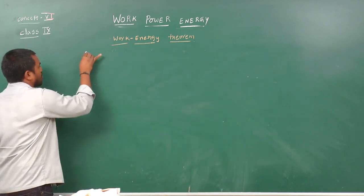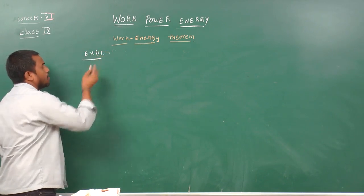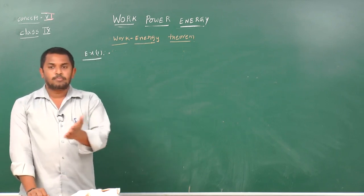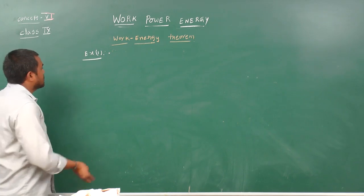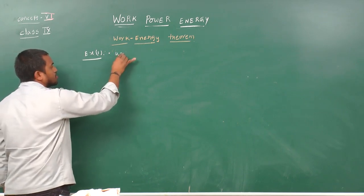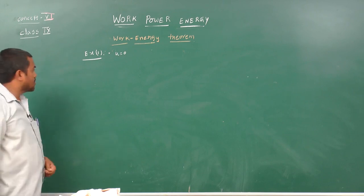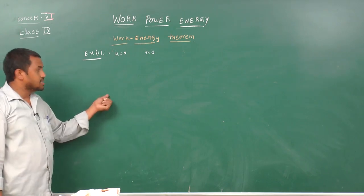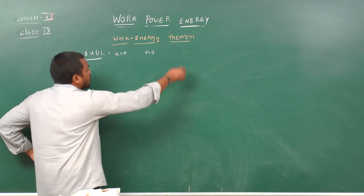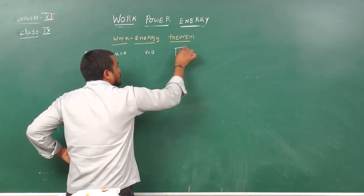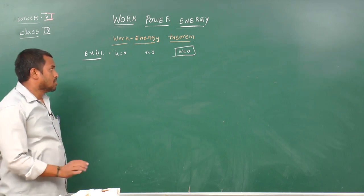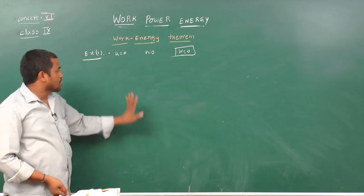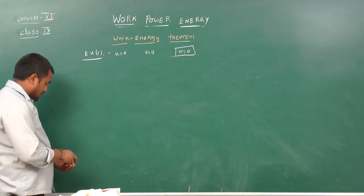Example 1: A book is lifted from the ground and placed on a table. Initially its velocity is 0 and finally its velocity is also 0. So initial kinetic energy is 0 and final kinetic energy is 0. Therefore, work done by all the forces must be equal to 0, because there is no change in kinetic energy.